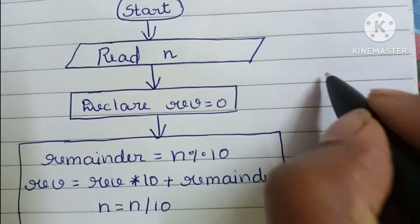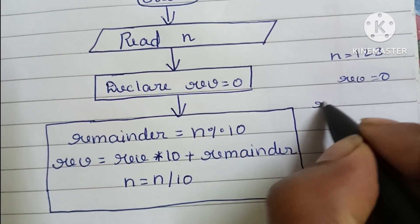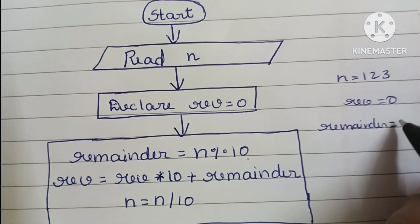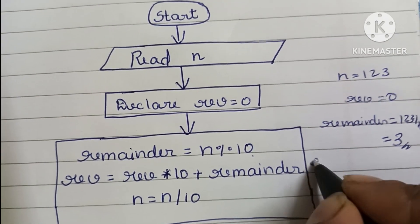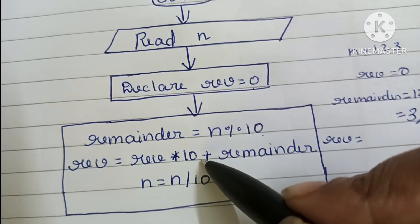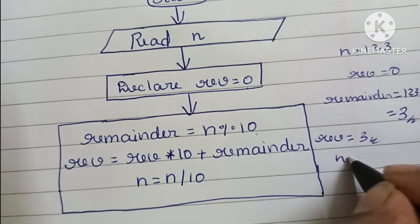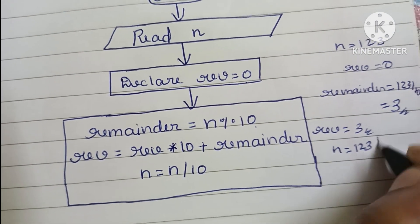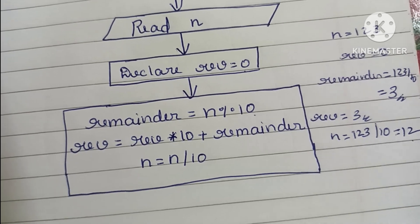For example, consider N = 123. Initially reverse = 0. First, reminder = N modulo 10 = 3. Then reverse = 0 × 10 + 3 = 3. Then N = 123 ÷ 10 = 12.